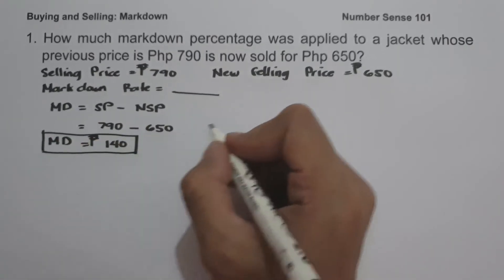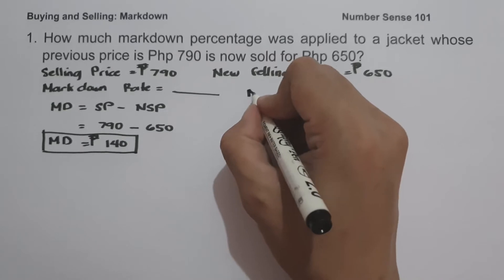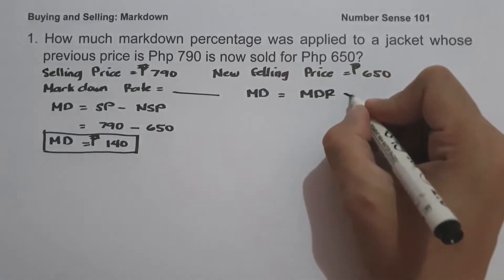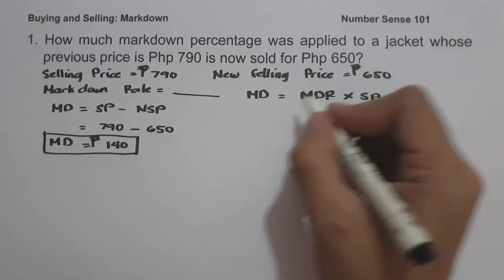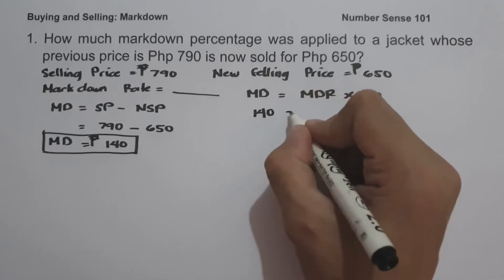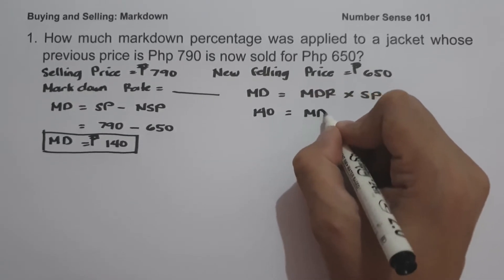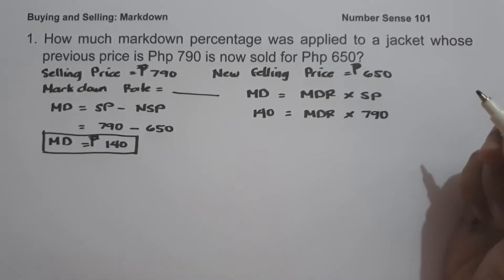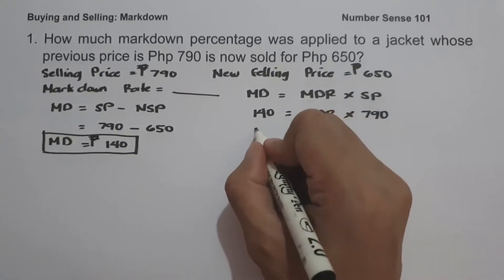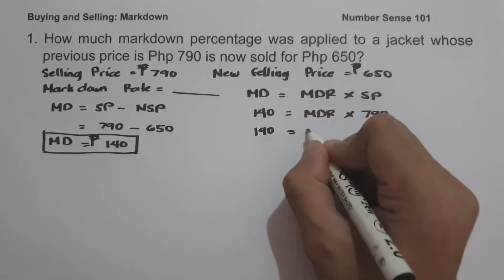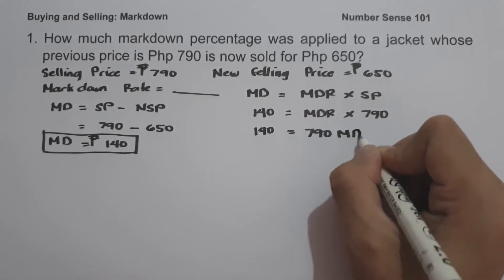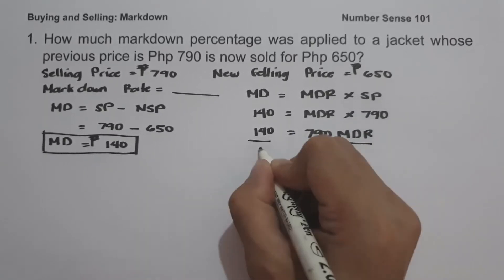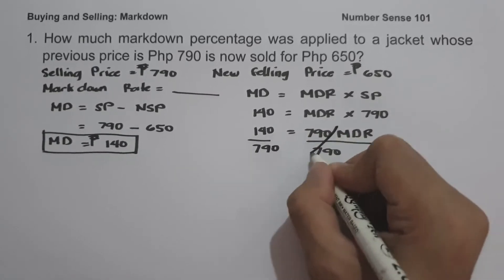Now let us use this to determine the markdown rate. We use the formula: markdown equals markdown rate multiplied by selling price. So 140 equals markdown rate times 790. To simplify, we have 140 equals 790 times the markdown rate. Let us divide both sides by 790 to determine the markdown rate.